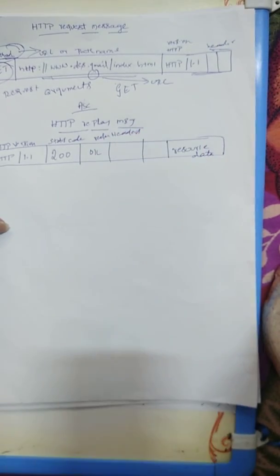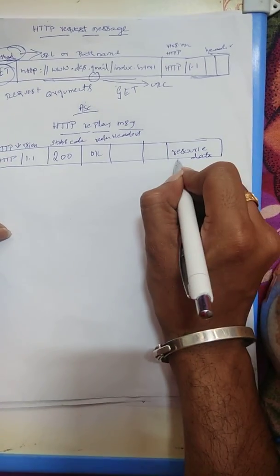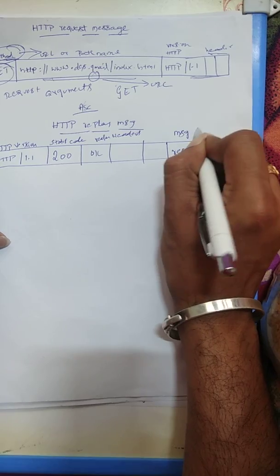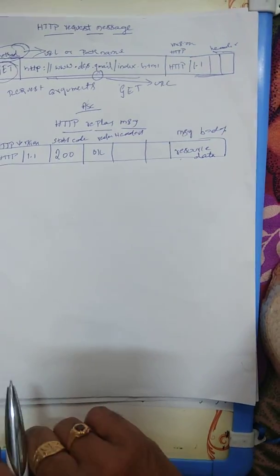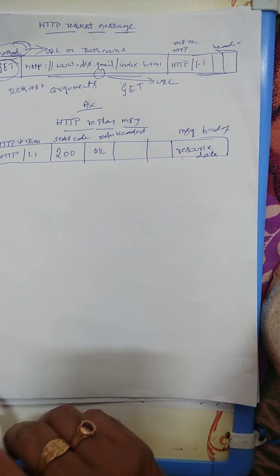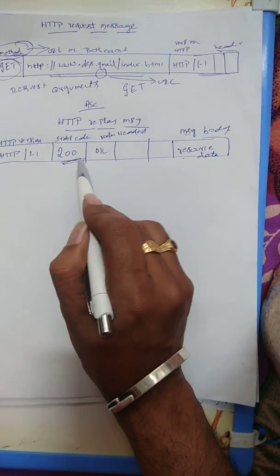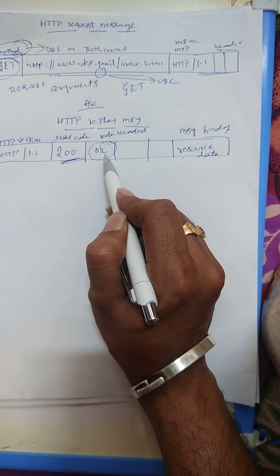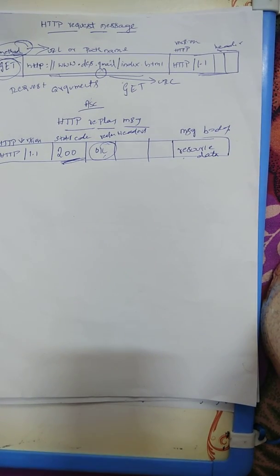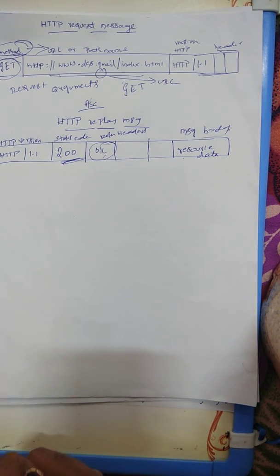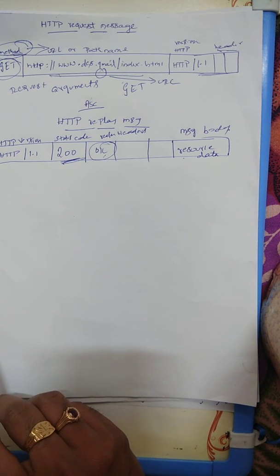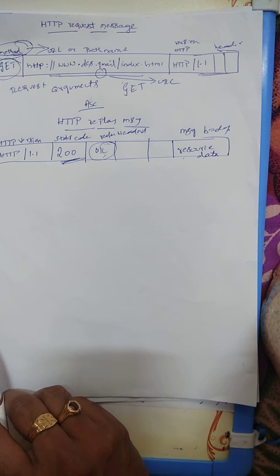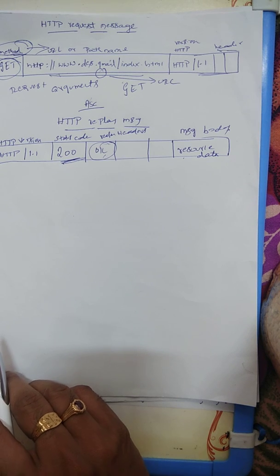You give an OK function and finally this is the resource data — this is called the message body. Now we will discuss the HTTP reply message. The status code and reason provide a report on the service's success or otherwise in carrying out the request. The header fields are used to pass additional information about the server and how to access the resource. This is called the main HTTP version format.